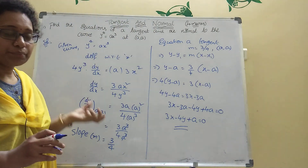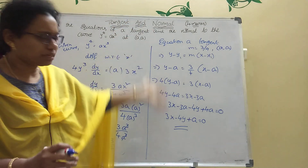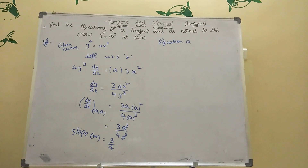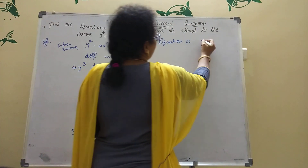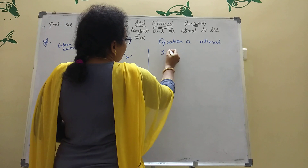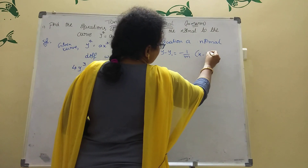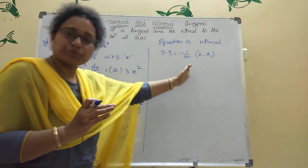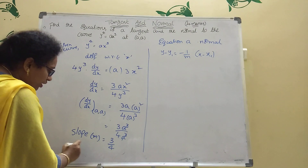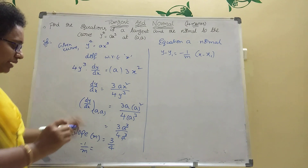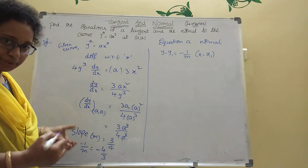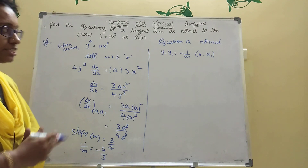Now equation of the normal. For the normal, the slope is the negative reciprocal: -1/m. Since m = 3/4, the normal slope is -4/3. The formula is y - y₁ = (-1/m)(x - x₁). The point is still (a, a) and -1/m = -4/3.